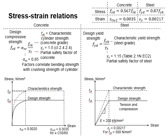It is then assumed to remain within the limits of the characteristic strength. Concrete is expected to achieve its characteristic strength at a strain of 0.002, while steel is expected to reach its characteristic strength at a strain of 0.00217.